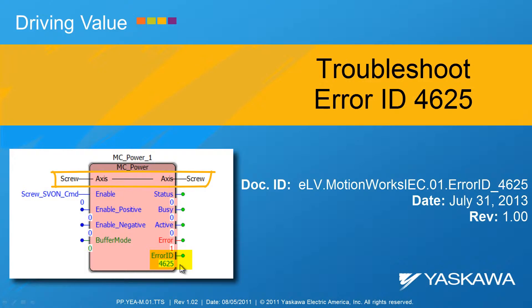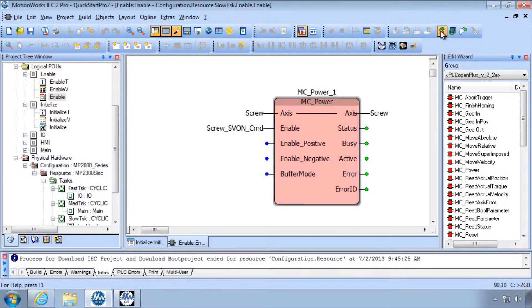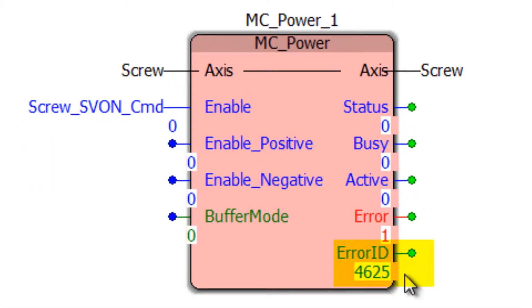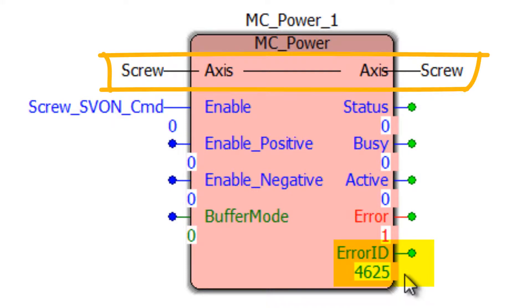This video shows how to troubleshoot and resolve error ID 4625 on a PLC open function block in MotionWorks IEC. Error ID 4625 means there is a problem with the axis variable. In this example, MC Power has produced the error 4625.